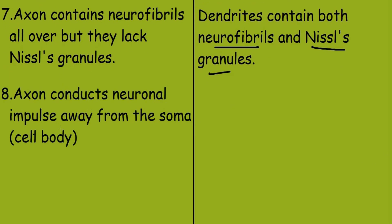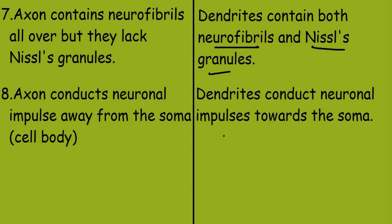Axon conducts neuronal impulse away from the soma, that is the cell body, while dendrites conduct neuronal impulses towards the soma.